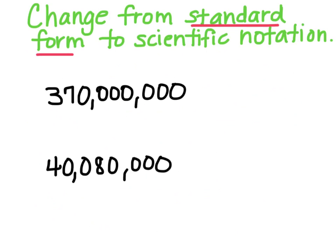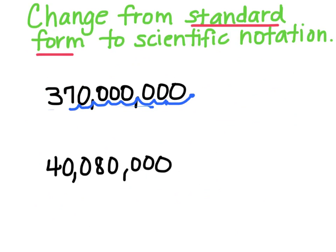Now we're going to go backwards — we're going to change from standard form back to scientific notation. To do that, you know the number has to be between 1 and 10. So basically I have to get this huge number down to a number between 1 and 10. You're going to take your decimal, put it at the end where it is, and move it back until you get to a number between 1 and 10. Keep moving it — still going — until you reach a number between 1 and 10. If I move it right to there, my number is 3.7.